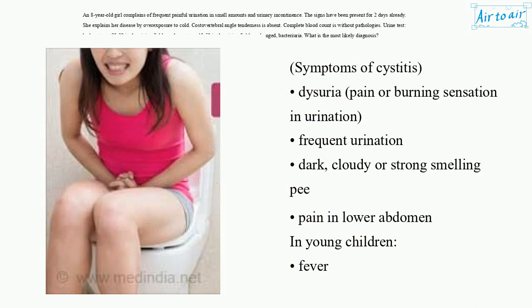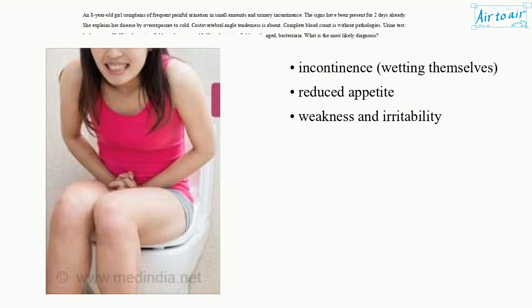Symptoms of cystitis: dysuria — pain or burning sensation during urination; frequent urination; dark, cloudy or strong-smelling urine; pain in lower abdomen in young children; fever; incontinence or wetting themselves; reduced appetite; weakness and irritability.